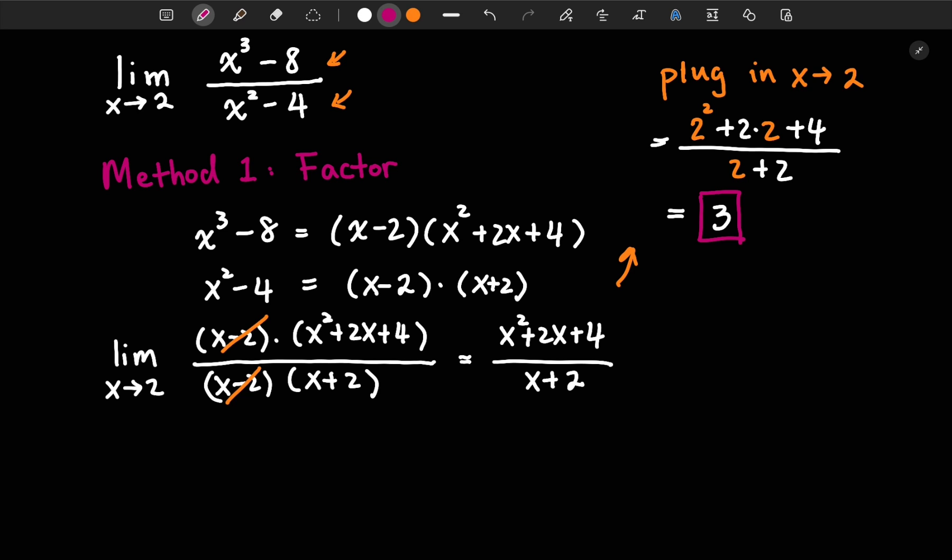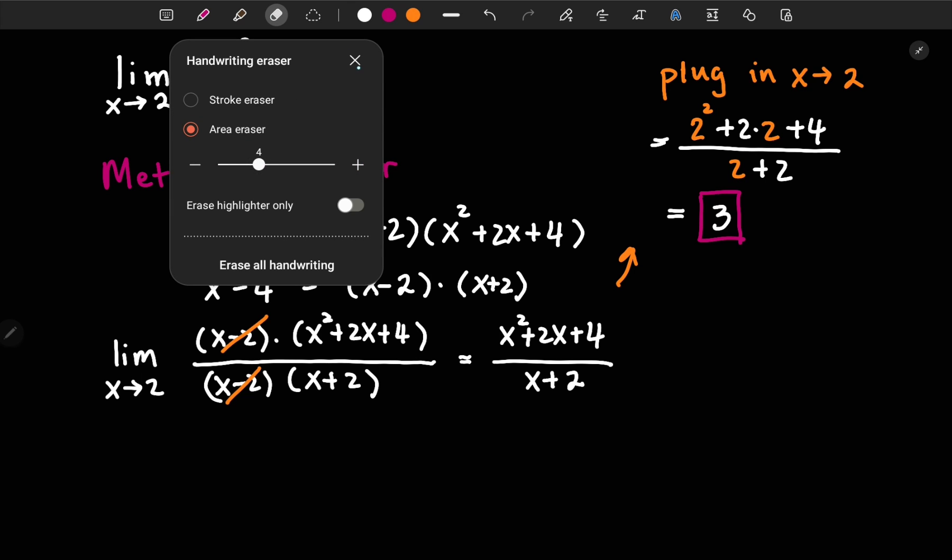So next time, if you have a polynomial both on the numerator and on the denominator, try to simplify and factor out the common term first. That should help you to get to the final answer. And let's look at a different approach.